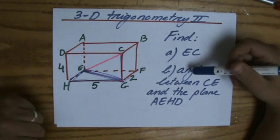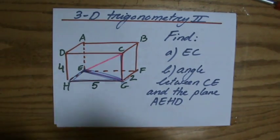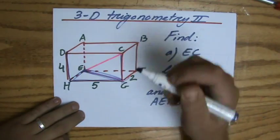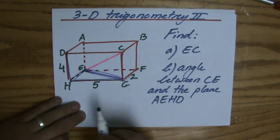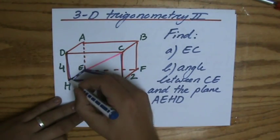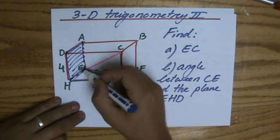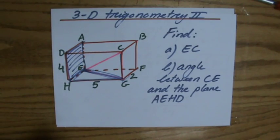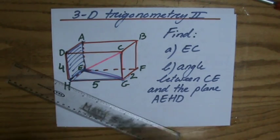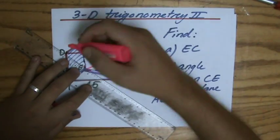Now even a little bit more advanced is the angle between this line and a plane. We're talking about the angle of EC and the plane AEHD. We're talking about this plane here on the side and the angle it makes with it.